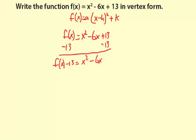We have x² - 6x. Let's just ignore the f(x) - 13 for now. We have x² - 6x, so we need plus something to make a perfect square. What we do is take this middle number, which is -6, and divide it by 2 and then square it.